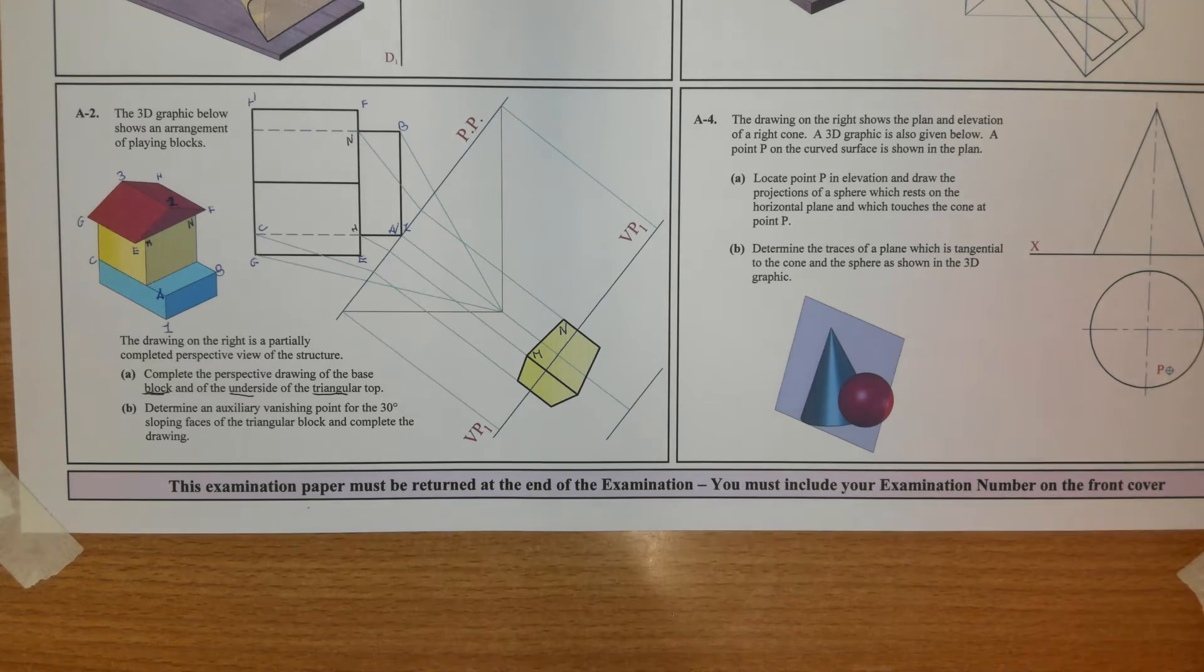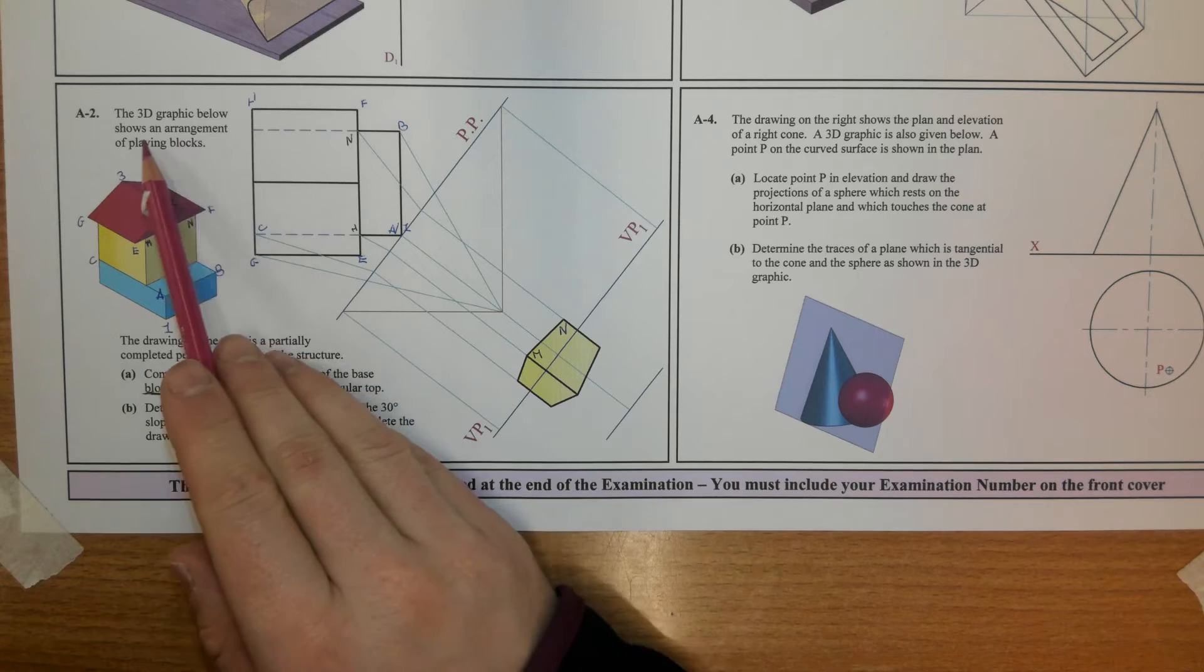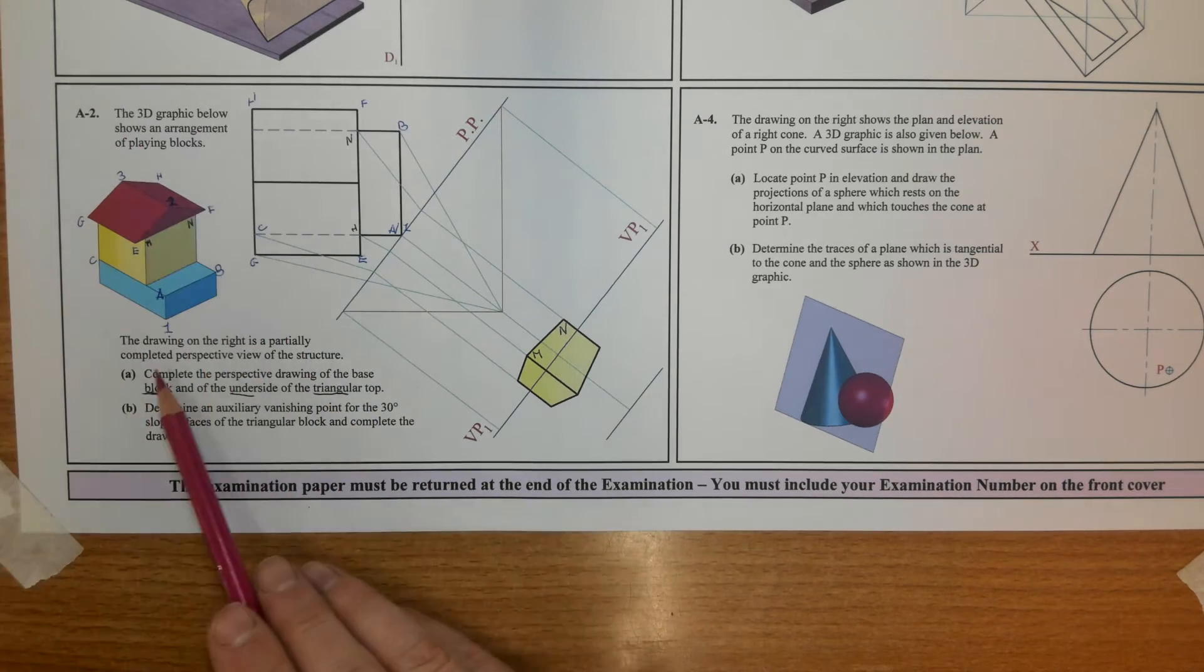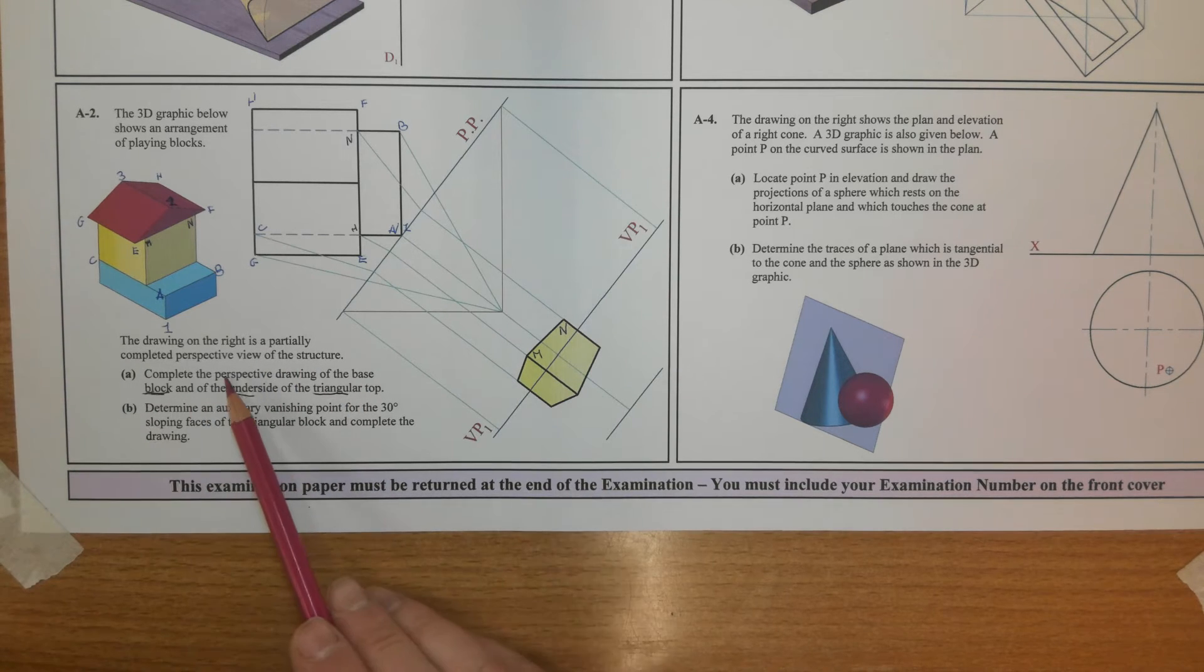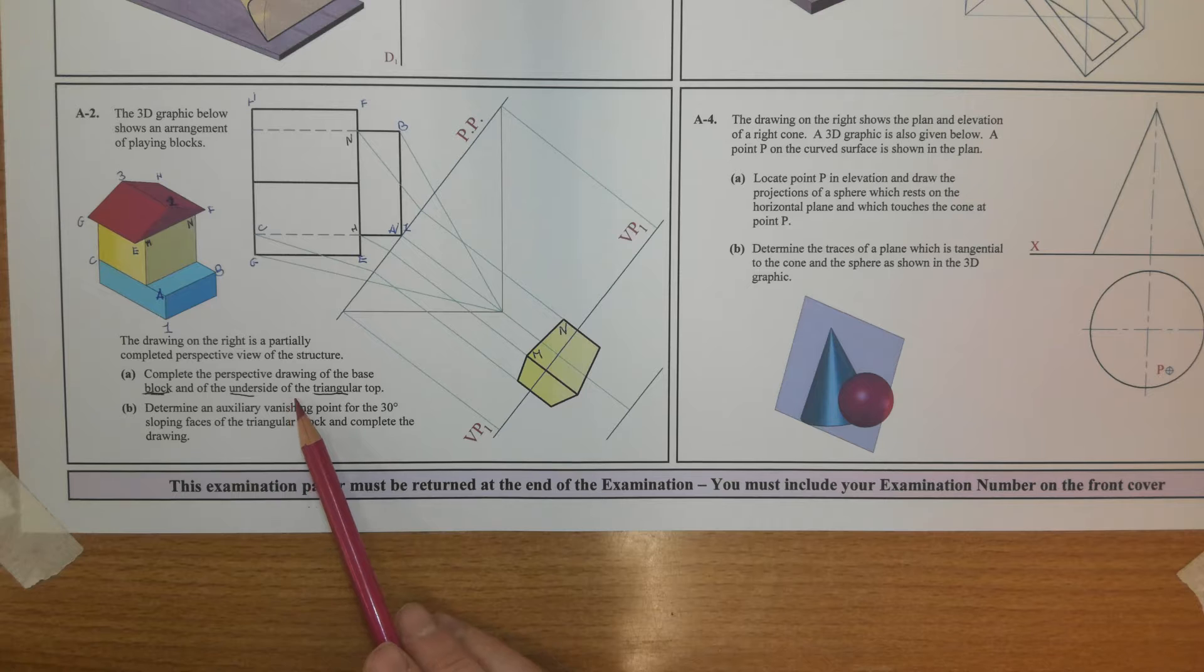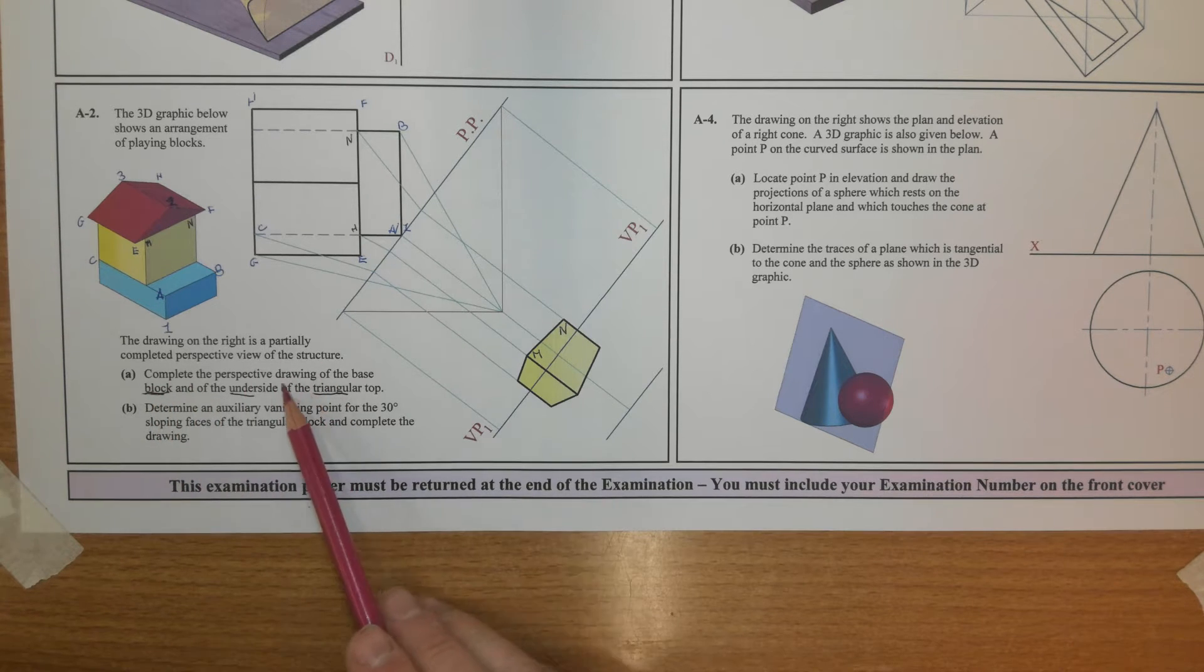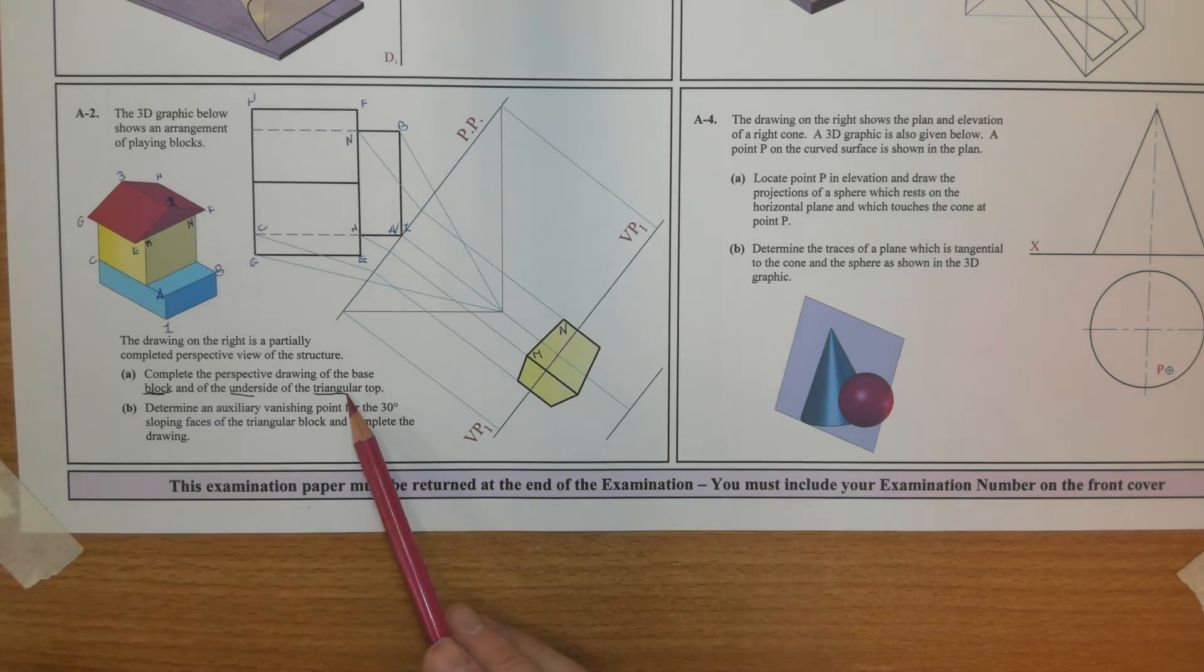Okay so this is 2009 question A2. The 3D graphic below shows an arrangement of playing blocks. The drawing on the right is a partially completed perspective view of the underside of the structure.